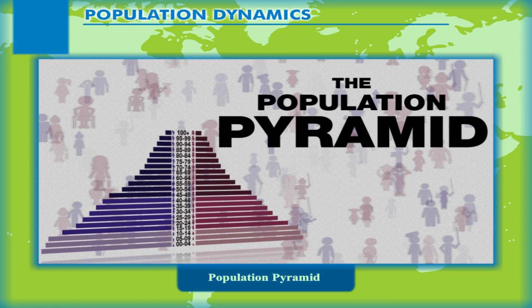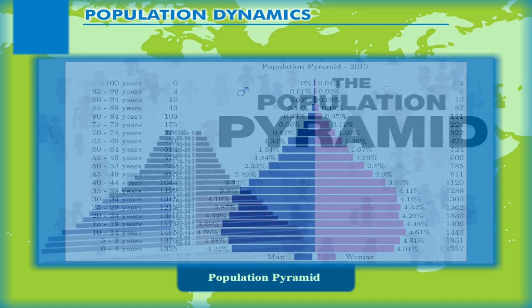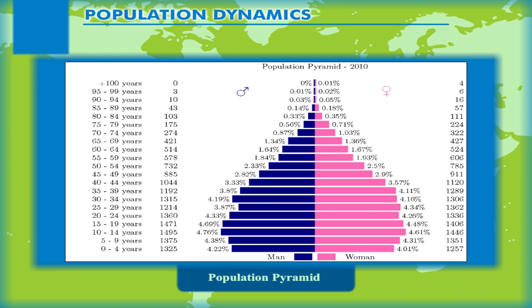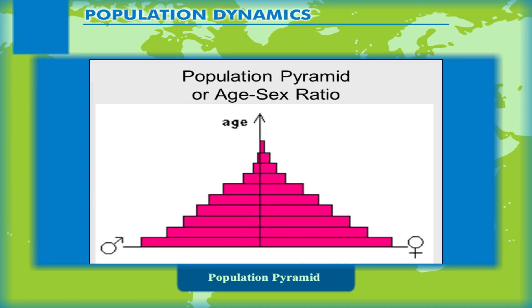A population pyramid is an easy way to look at the age composition and sex ratio of the population of any country. A population pyramid shows the total population divided into various age groups, for example 5 to 9 years, 10 to 14 years.